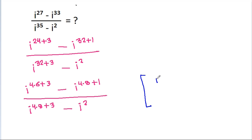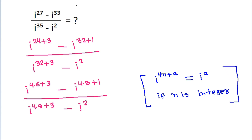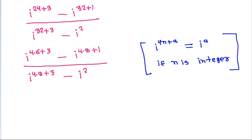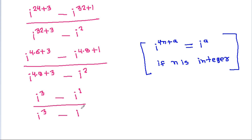And iota to the power 4N plus A is equal to iota to the power A. So iota to the power 4 times 6 plus 3 will be iota power 3, minus iota power 4 times 8 plus 1 will be iota power 1, by iota power 4 times 8 plus 3 will be iota power 3, minus iota power 2.